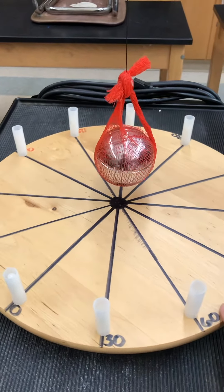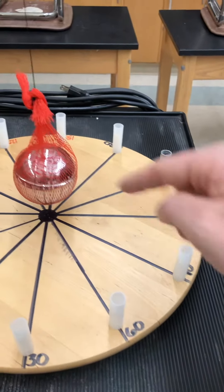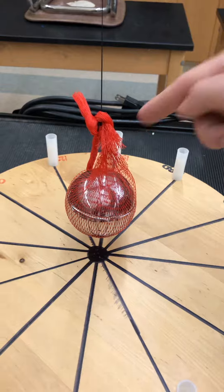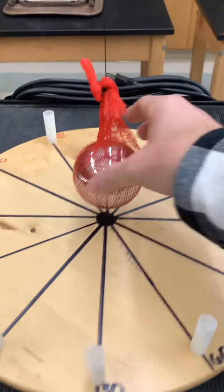As I rotate this counterclockwise, the caps get knocked over in a clockwise direction. The Lazy Susan goes counterclockwise. The caps get knocked over clockwise. So let me demo this.